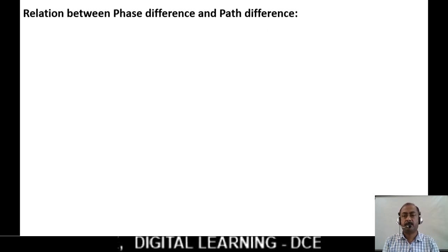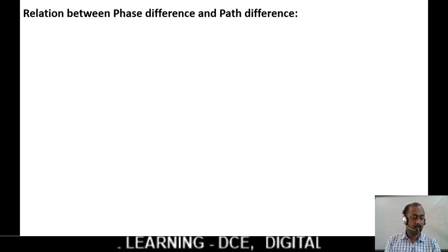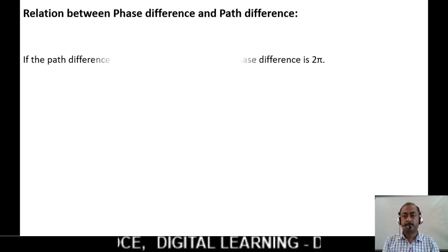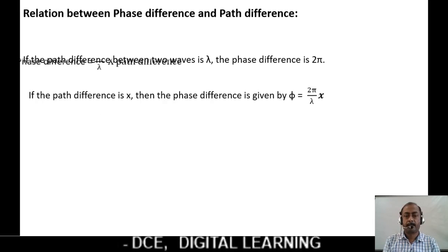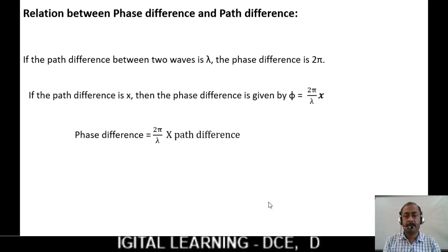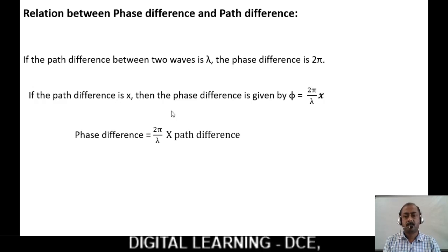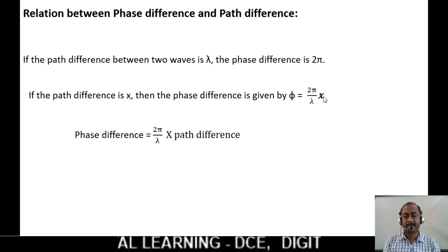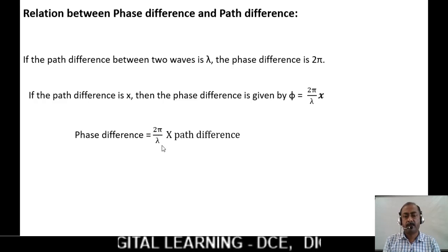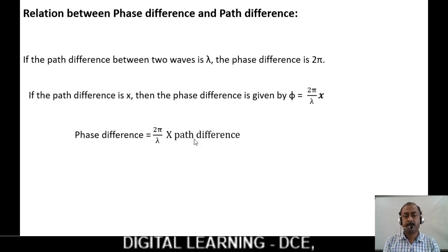Let us see the relation between phase difference and path difference. If the path difference between two waves is λ, the phase difference is 2π. If the path difference is x, then the phase difference is given by the formula φ = (2π/λ)·x. That is, phase difference = (2π/λ) × path difference.